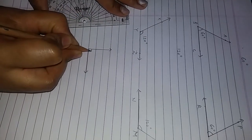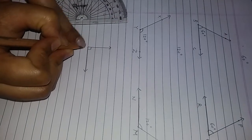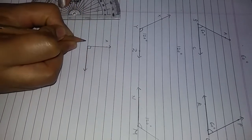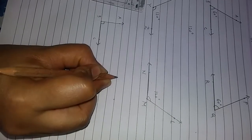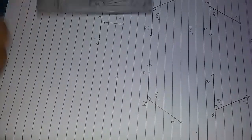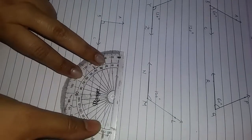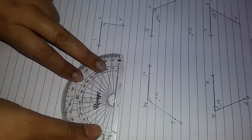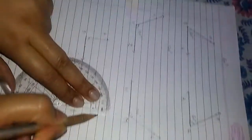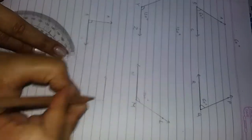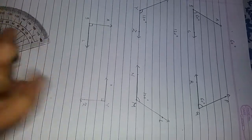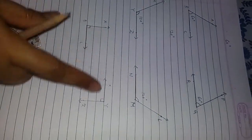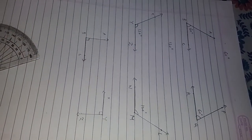This is the symbol of 90 degrees. See how I am drawing the 90 degree angle. Both are 90 degree angles, and this is the symbol of the 90 degree angle.